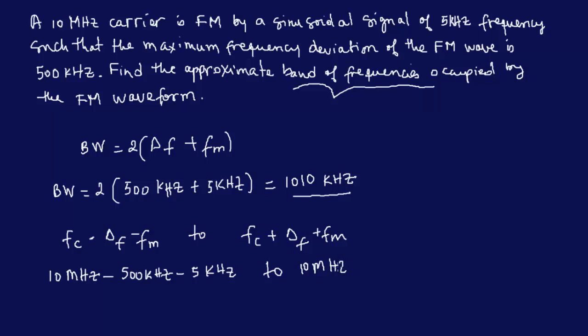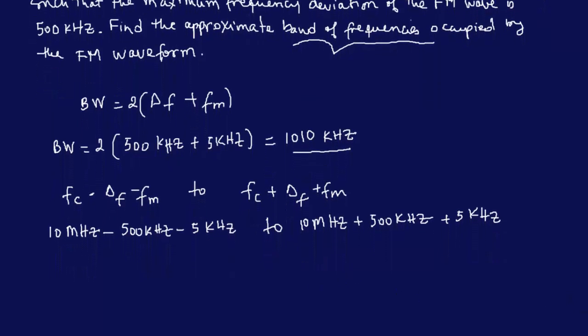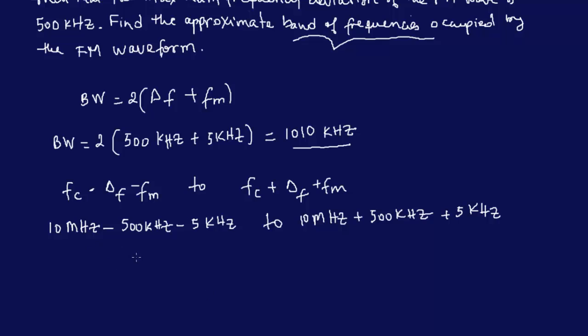It ranges from the left side to the right side, so you have 10 megahertz plus 5 kilohertz plus 500 kilohertz. Pay attention to the megahertz - that's 10 to the power 6. Don't just add 10 plus 500 or you'll make a mistake. Pay attention to the units.